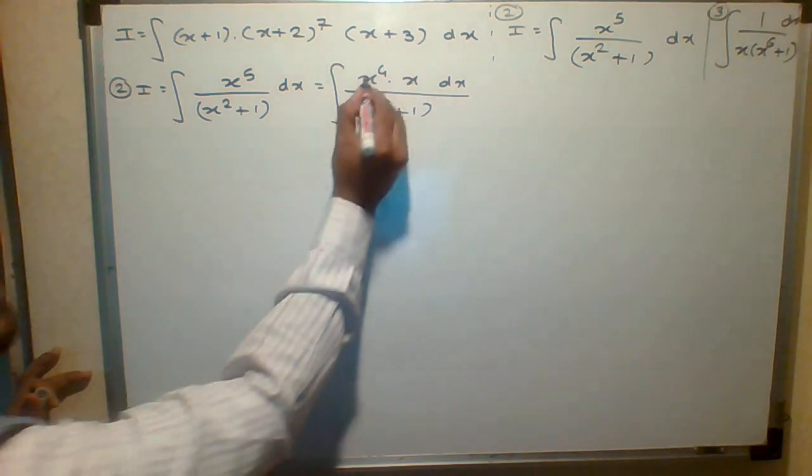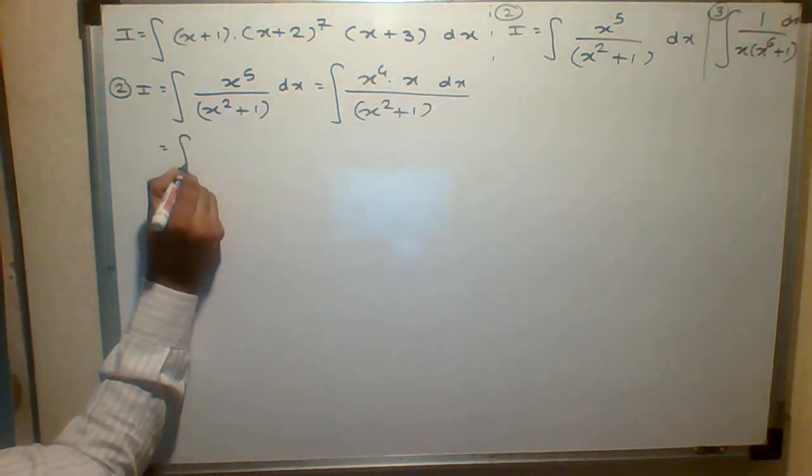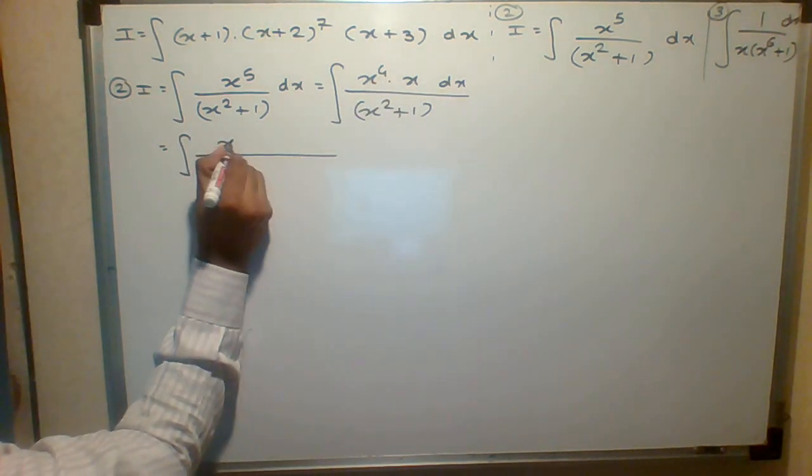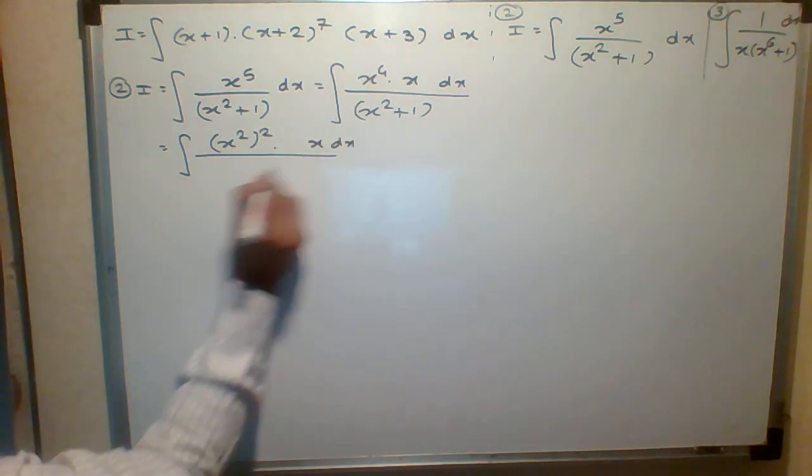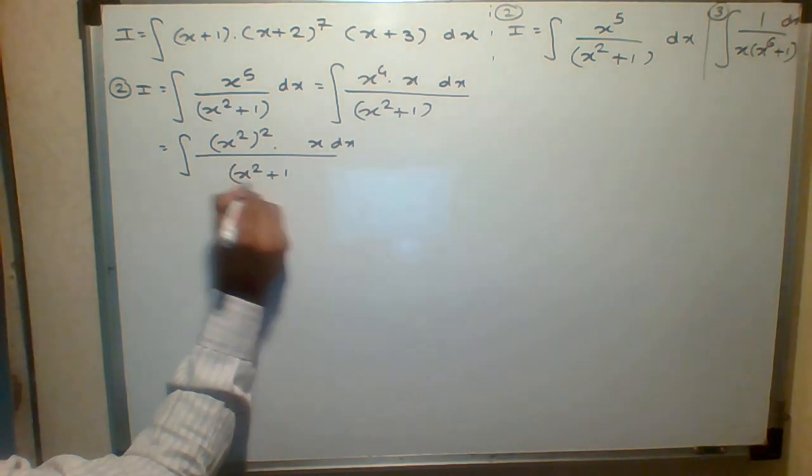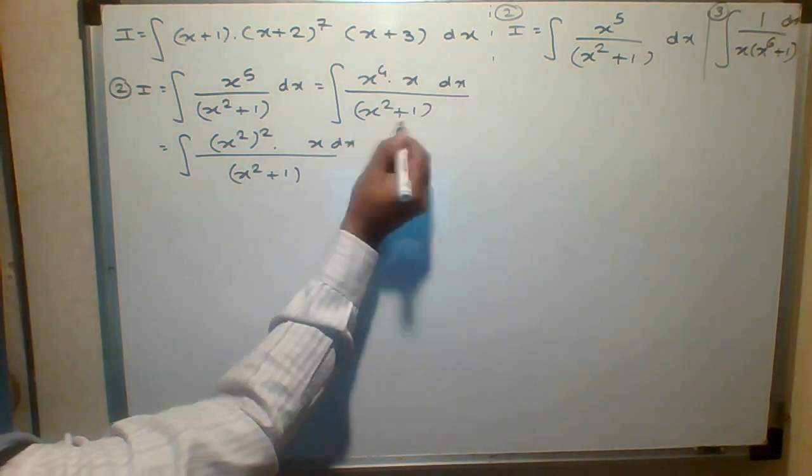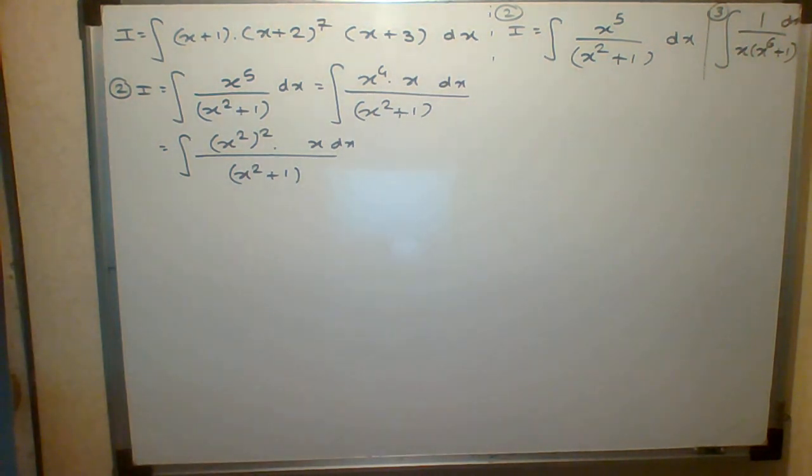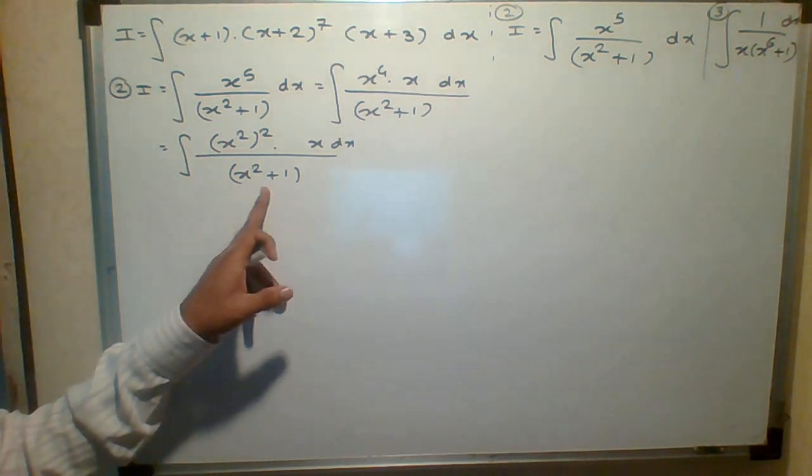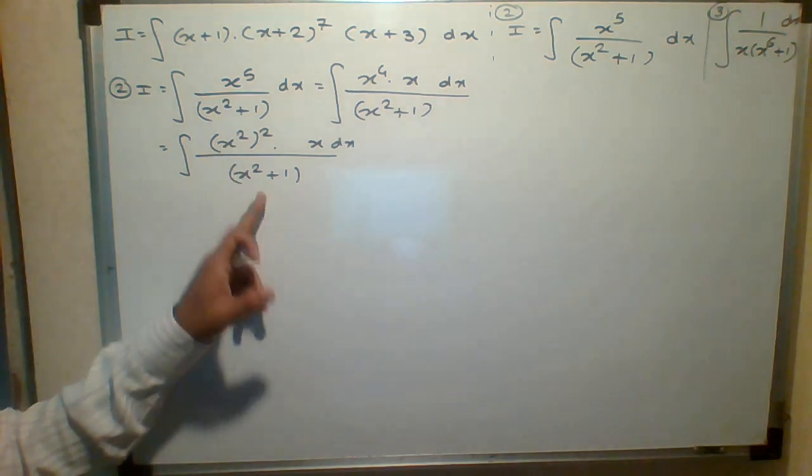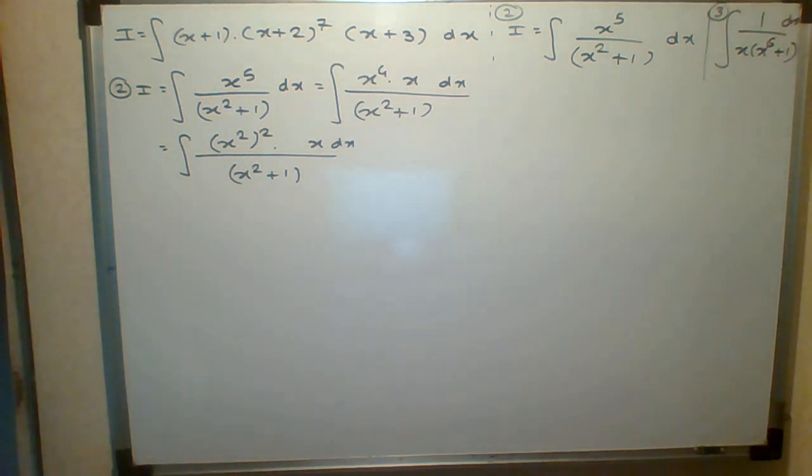I observe here this x squared plus 1 in the denominator creates a problem. What do I do? So I have rewritten the term like x squared. Now what will happen with that? Now listen students.